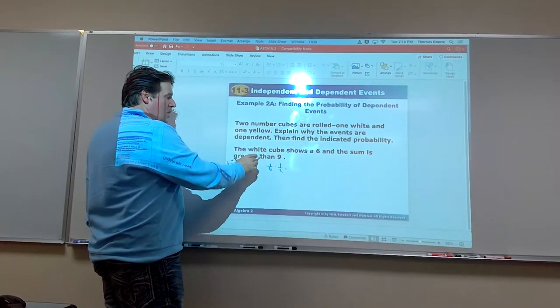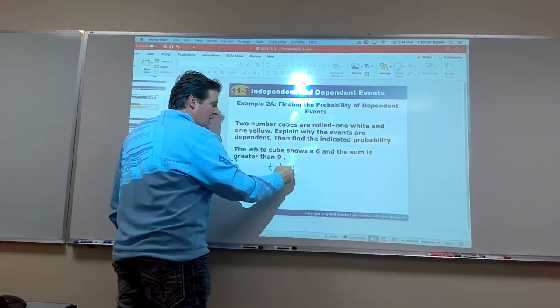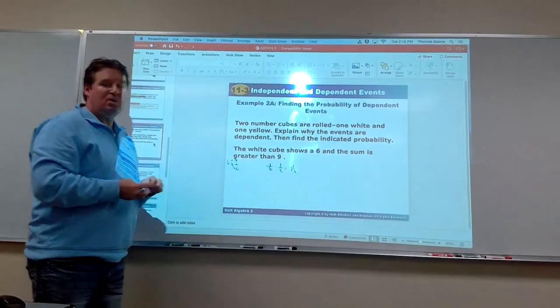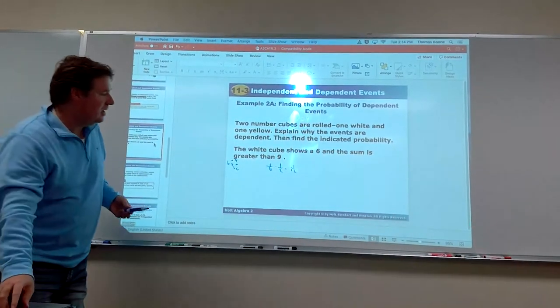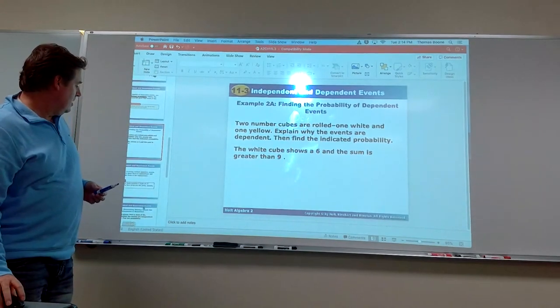So our total probability is multiplying those two together. We're taking the probability of A and the probability of B, given that A has occurred. Okay, so then we'd have our 1/12 would be what that is. Okay, so again, got to take that probability of A times the probability of B, given that A has occurred.